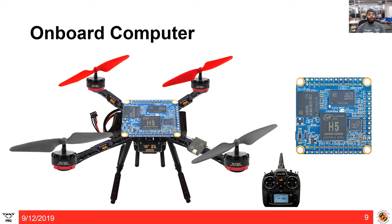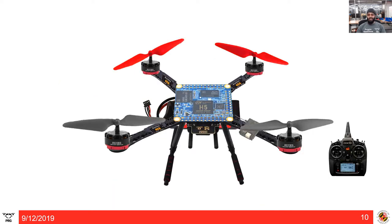To perform any high-level operations, you need an onboard computer. This computer handles tasks like processing camera feeds, optical flow sensors, or other sensor data to detect the environment and act accordingly — operations that a flight controller's processor cannot handle alone. The onboard computer runs an operating system, combines all this information, and sends lower-level commands — like desired angles — to the flight controller.